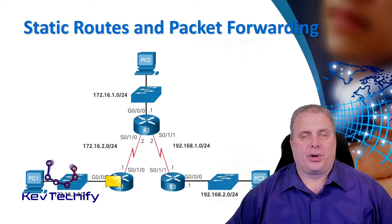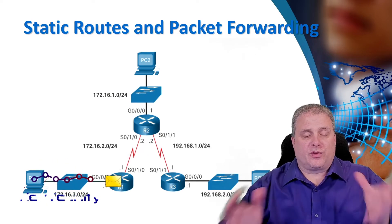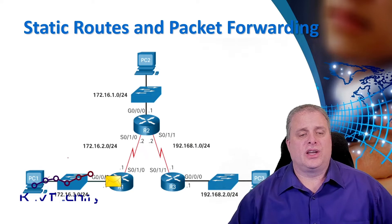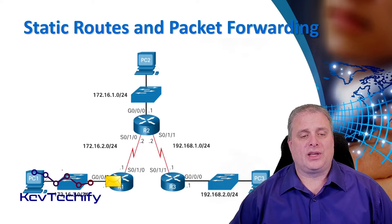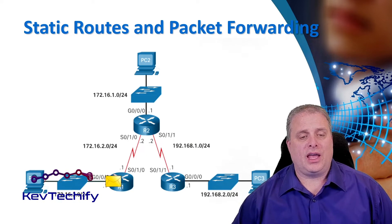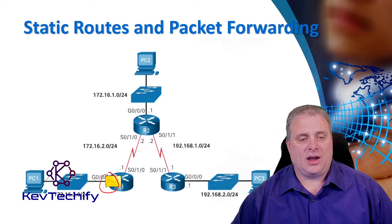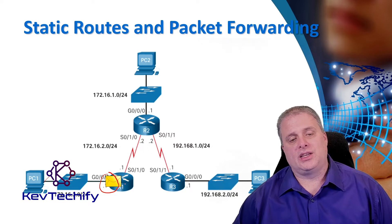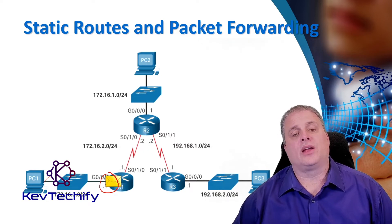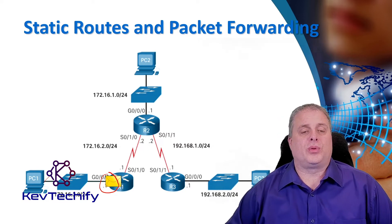We put a layer 2 frame around it and send it to our default gateway. Our default gateway is right here — the interface on R1 that's on our network, but it's connected to the router that gets us to other places.